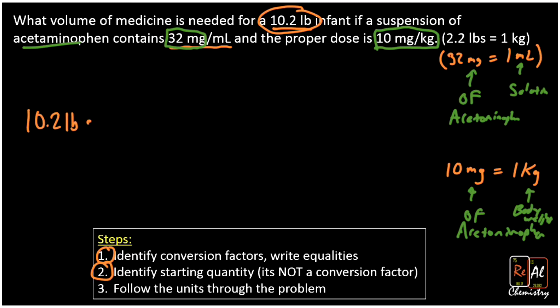All right, now I have three conversion factors, or equalities that I've written down. 2.2 pounds is one kilogram, 32 milligrams is one milliliter, and 10 milligrams is one kilogram. So only one of those has pounds. So I know I'm going to start with this guy with pounds. Pounds need to go on the bottom to cancel out. Kilograms will go up top. So I'm going to put 2.2 pounds in one kilogram. So that gets rid of pounds.